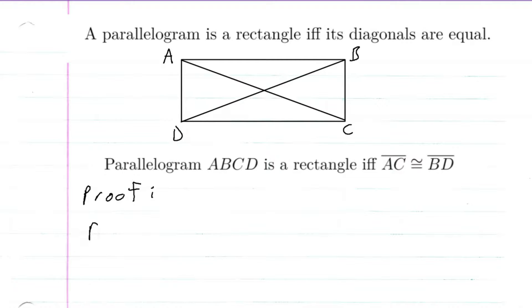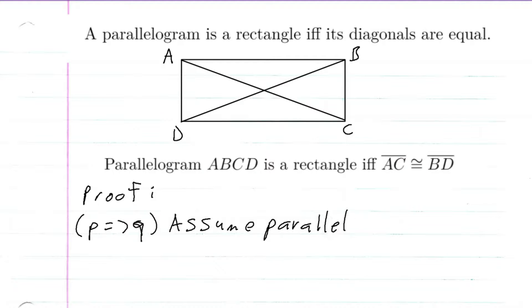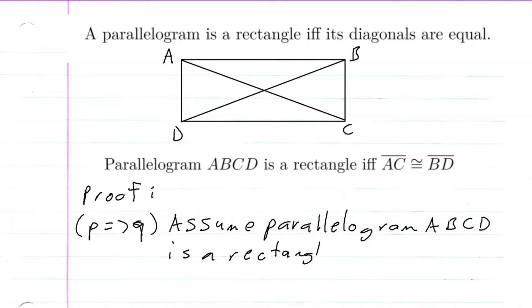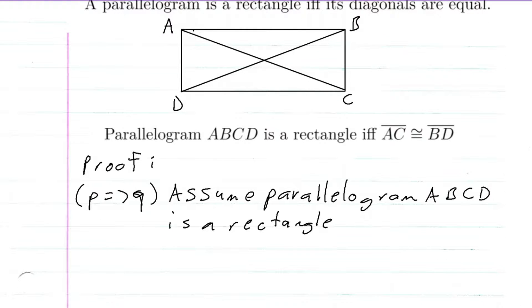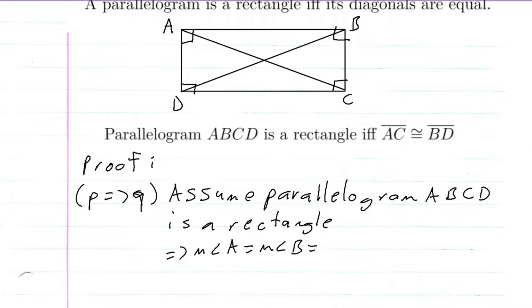We're going to start with P implies Q. So we're going to assume parallelogram ABCD is a rectangle. If it's a rectangle, that implies that all of these angles are 90 degrees. So if we have a rectangle, this implies that the measure of angle A is equal to the measure of angle B, which is equal to the measure of angle C, which is equal to the measure of angle D, which is equal to 90.